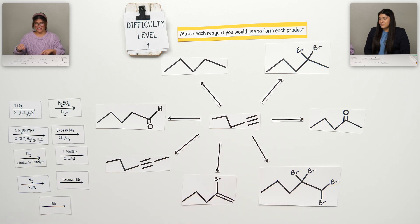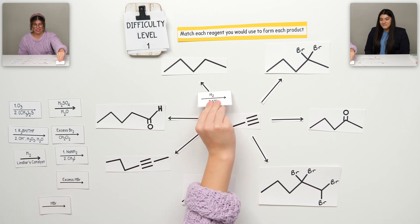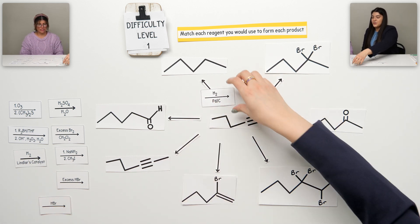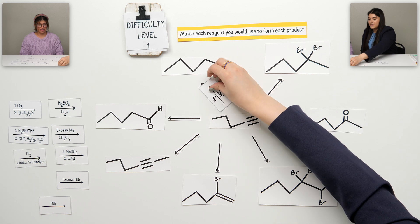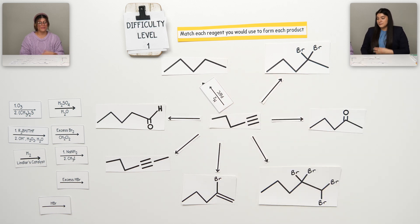I'm just going to work my way this way. So I know that if I have an alkyne, I'm going to get an alkane. I'm going to use this guy right here. Good. Reduction. I'm just going to move this so it goes with the arrow. That makes sense.